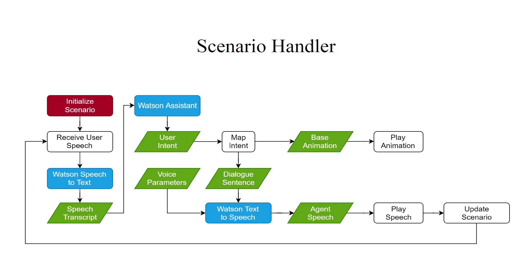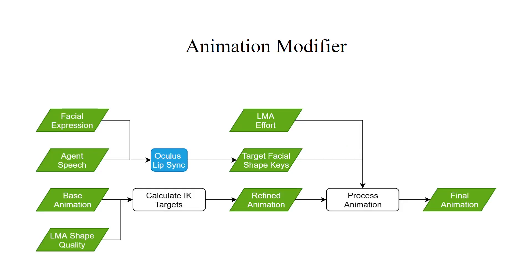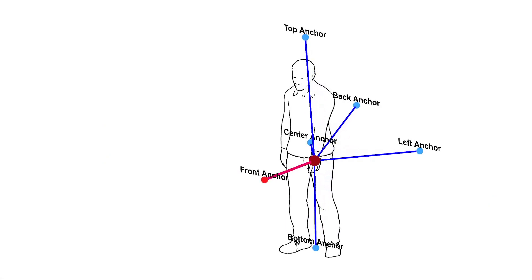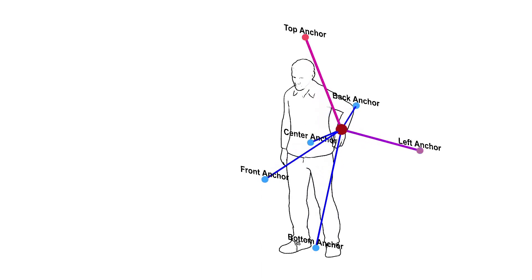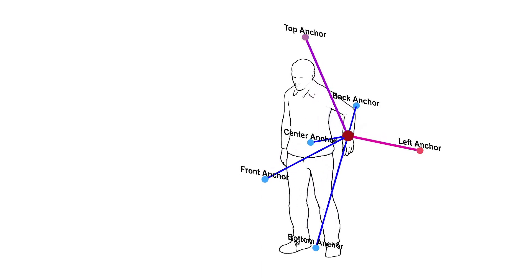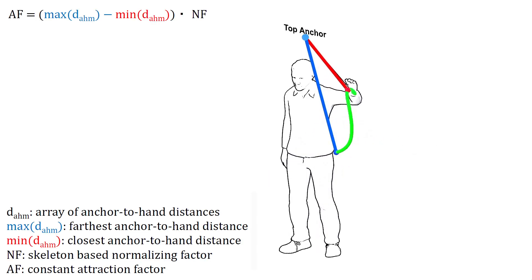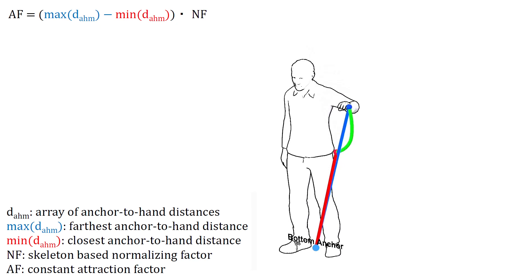We vocalize the dialogue using transformations that express personality. We modify the base animation in terms of hand movement, posture, and facial expression to support the desired personality. To adjust hand movement, we use inverse kinematics and orient end effectors of hands towards different directions based on LMA shape parameters. For each hand, we use surrounding anchor points to calculate the attraction towards each direction, computing a constant attraction factor per anchor by normalizing the distance range of the hand from the anchor.